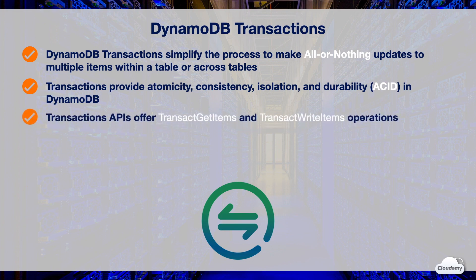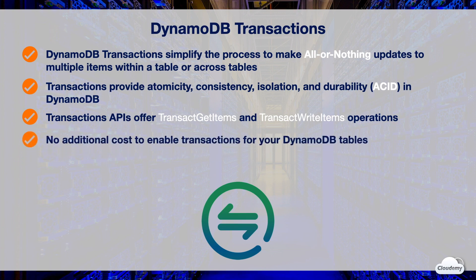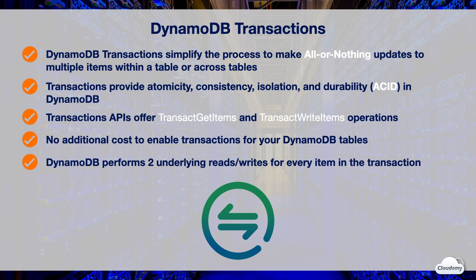Transaction APIs offer the TransactGetItems and TransactWriteItems operations that let you group multiple reads or writes into a single operation. There is no additional cost to enable transactions for your DynamoDB tables — you pay only for the reads or writes that are part of your transaction. However, DynamoDB performs two underlying read or write actions for every item in a single transaction: one action for preparing the operation and another for committing the transaction.